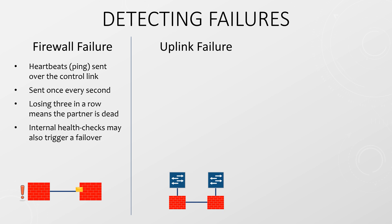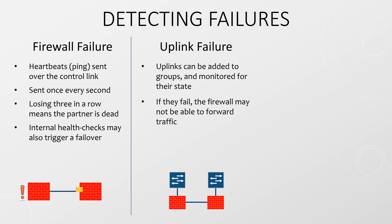An uplink failure occurs when a link directly connected to the firewall fails, but the firewall itself is fine. We're not talking about HA links here — we're thinking about links to switches or routers. Even though the firewall is still alive, it won't be able to forward traffic. So we configure the firewalls to watch the state of individual links or groups of links, and if enough of them fail, this can trigger a failover.